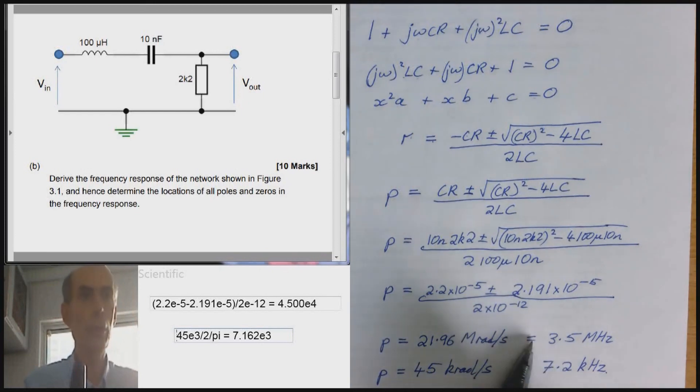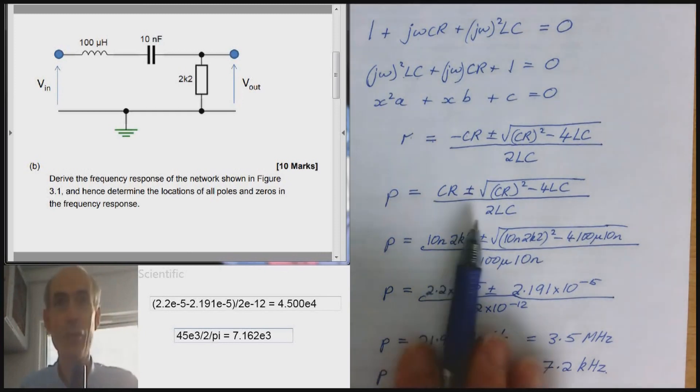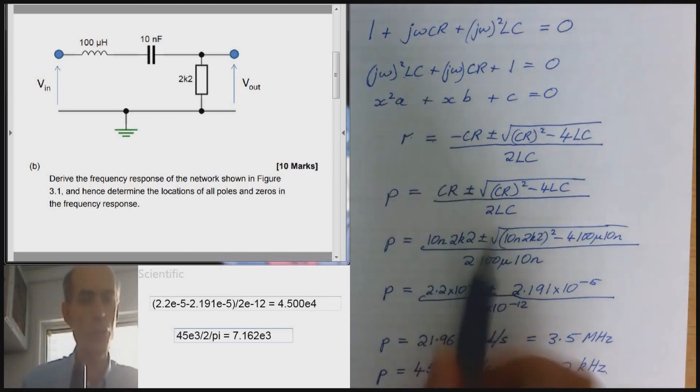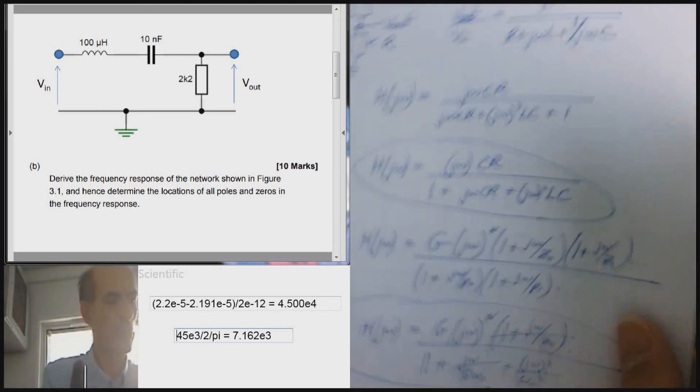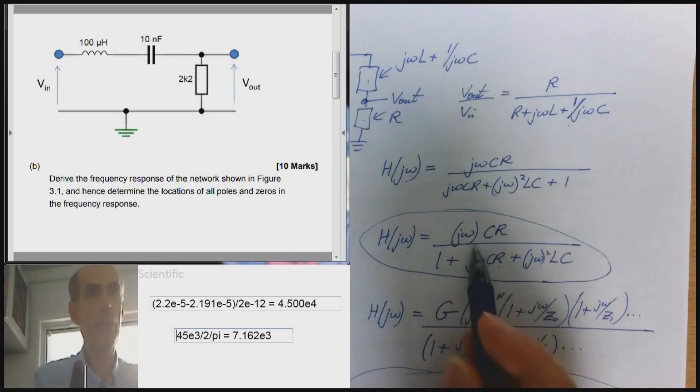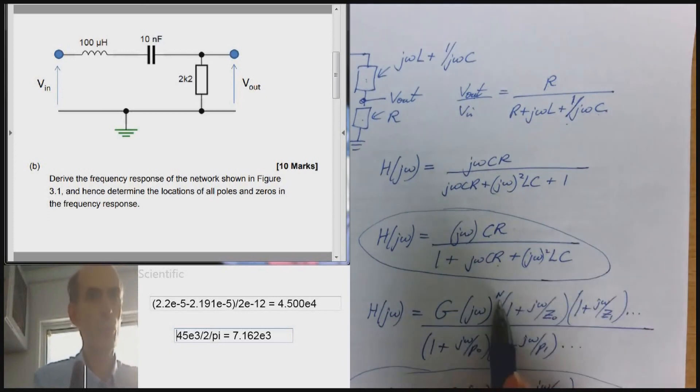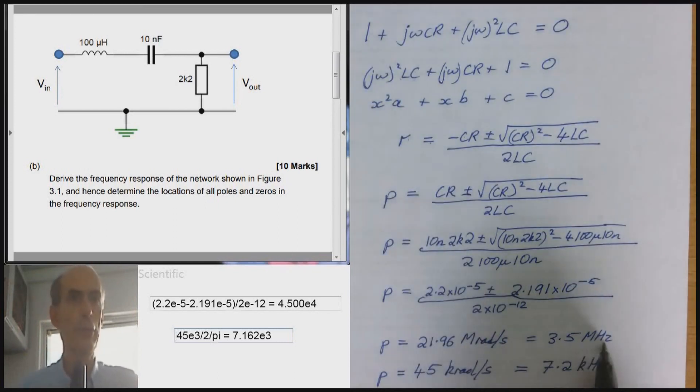Right. So I've got two poles, one at 3.5 megahertz, one at 7.2 kilohertz. And don't forget, I've also got the zero at zero hertz because the numerator of the frequency response, this one up here, had a jω in it. N was one. So there's a zero at zero hertz. There's a pole at 3.5 megahertz. And there's another pole at 7.2 kilohertz. And that's it. Ten marks.